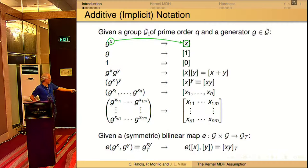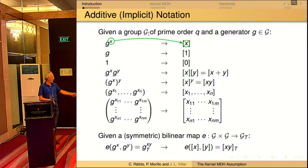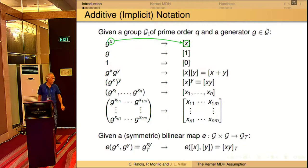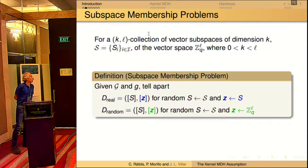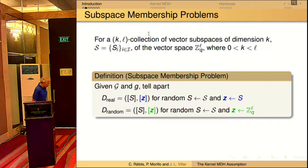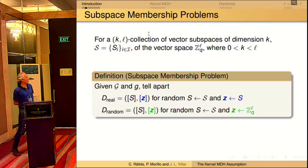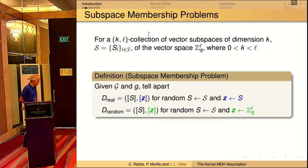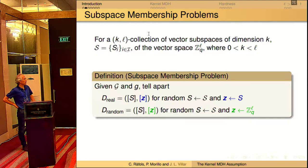We use the same notation for pairings. This subindex T means that this element is the generator of the target group raised to the x plus y power. We thought about a generalization of the classical Diffie-Hellman decisional problem and the linear problem, and then they can be included in a very wide family of problems that we call subspace membership problems.